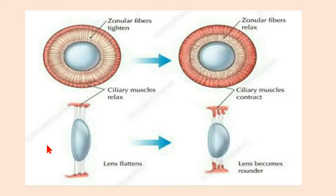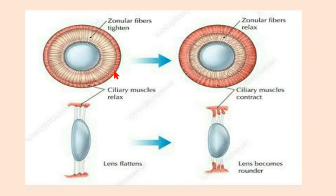As mentioned earlier, ciliary muscles and suspensory ligaments play a very important role in changing the shape of the lens. Here the lens is flattened in shape, and here the lens is rounded in shape. The lens is placed behind the iris by means of ciliary muscles and suspensory ligaments.